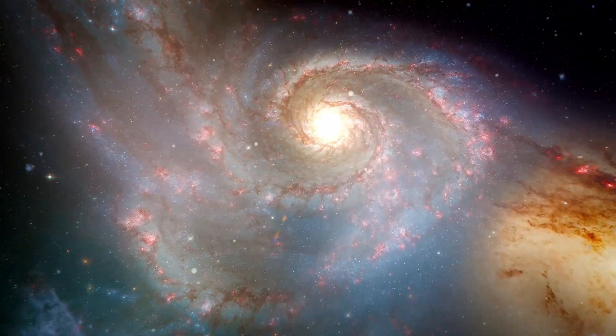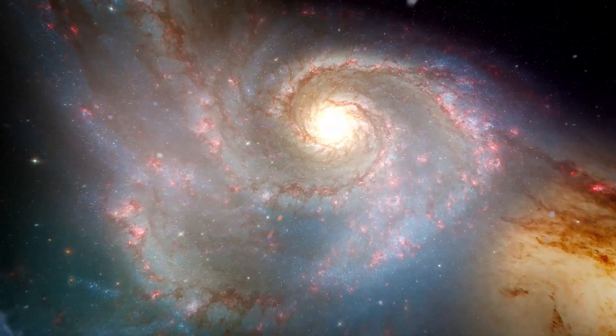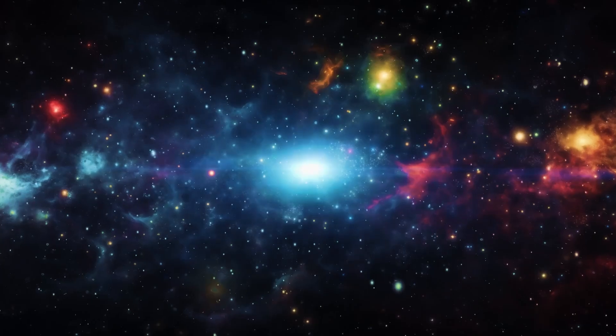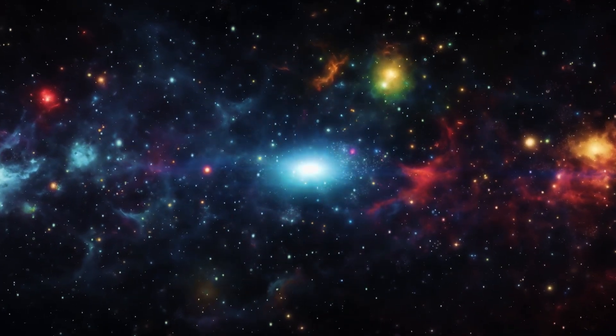Through meticulous analysis of gravitational lensing effects within James Webb Telescope imagery, scientists endeavor to construct detailed maps delineating the spatial distribution of dark matter.